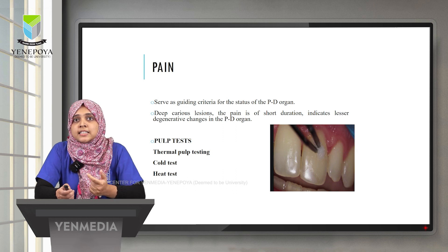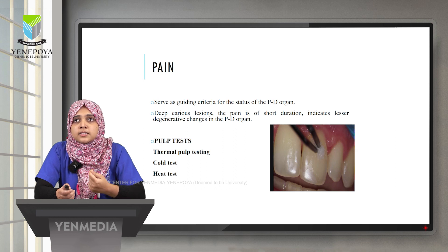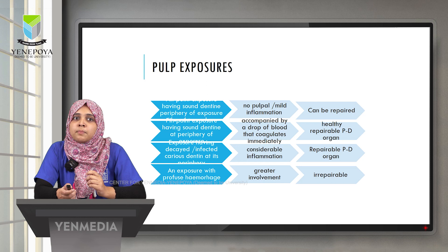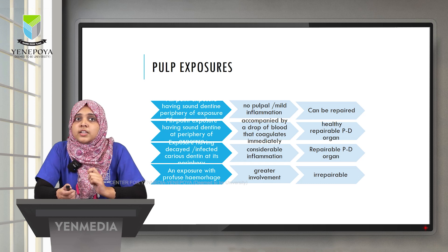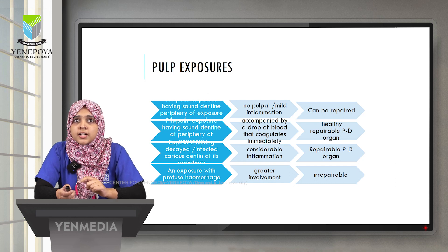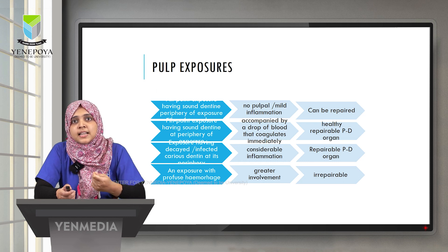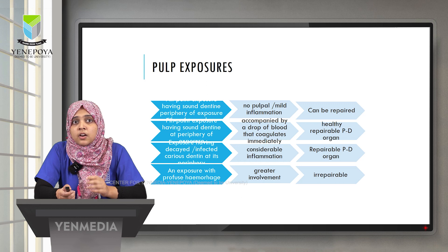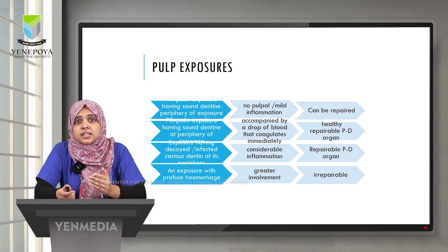Pulp vitality tests include thermal testing using hot GP sticks, cold tests using ice or dry ice, and electric pulp testing using EPTs. Pulp exposure characteristics are also important: pinpoint exposure with no hemorrhage indicates no pulpal inflammation; exposure with sound peripheral dentine where blood coagulates immediately indicates a healthy repairable pulp; exposure with caries at the periphery indicates considerable but repairable inflammation; and exposure with profuse uncontrolled hemorrhage indicates an irreparable pulp-dentine organ.